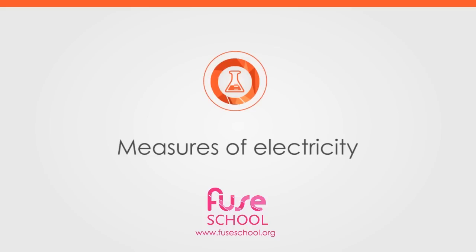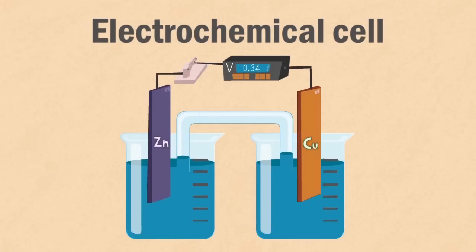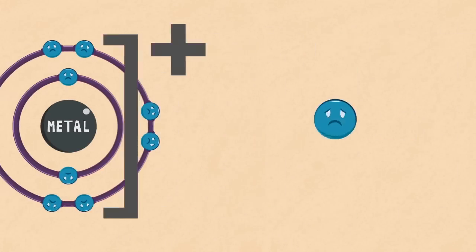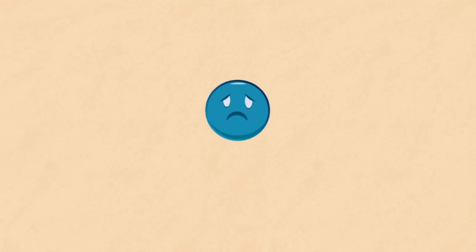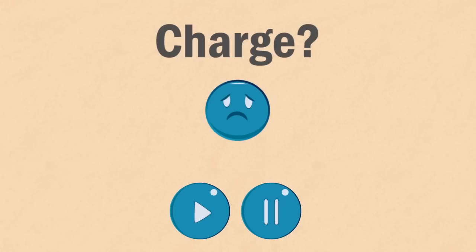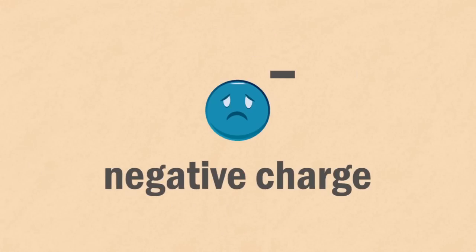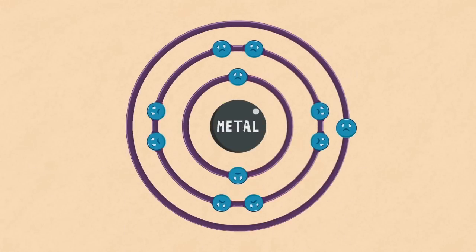In this video we are going to learn about measures of electricity by considering an electrochemical cell. When metals form ions they give away one or more electrons. Can you remember the charge on the electron? Pause the video and continue when you are ready. The correct answer is that electrons have a negative charge.